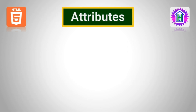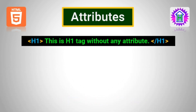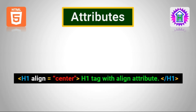Now let us talk about attributes. Attributes are nothing but properties of a tag that add some enhancement to the tag. For example, the H1 tag is used for writing the highest level of heading in a web page. Generally, headings written in HTML are left aligned, but if I want to align the heading at the center of the page horizontally, I can write an align attribute and set its value to center.